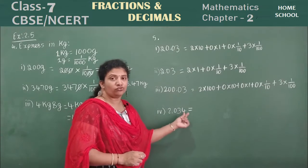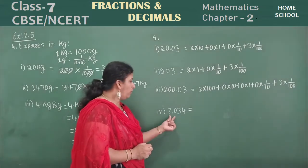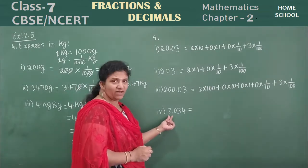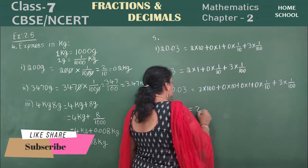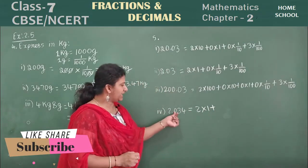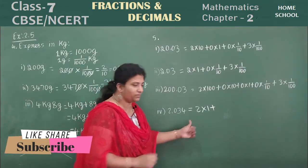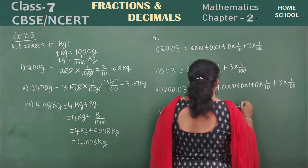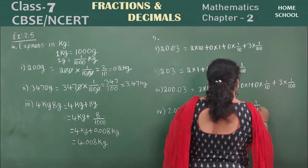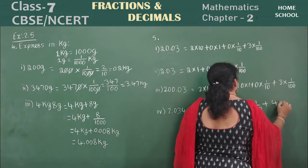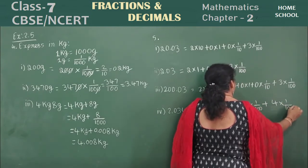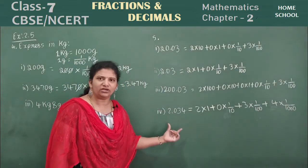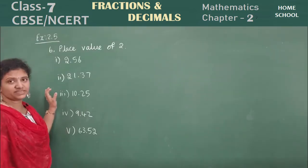See the last one in this main: 2.034. So how could you write this one? 2 is in ones place, that means 2 into 1 plus this is tenth, hundredth, thousandth position. So that is 0 into 1 by 10 plus 3 into 1 by 100 plus 4 into 1 by 1000, tenth place. Okay. Split the decimals means this is the way we need to split your decimals. Right?